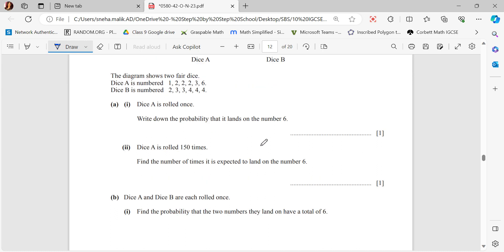Dice A is rolled once. Write down the probability that it lands on the number 6. Out of the 6 possible faces, 6 comes only one time, so this would be 1 by 6.